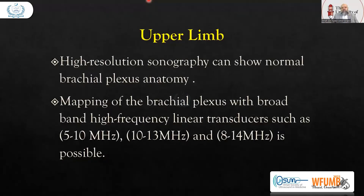Let's discuss some important peripheral nerves one by one and how we scan them. In the upper limb, high-resolution sonography can show normal brachial plexus anatomy. Mapping of the brachial plexus with a broadband high-frequency linear transducer — such as 5 to 10 MHz, 10 to 13 MHz, or 8 to 14 MHz — is possible.